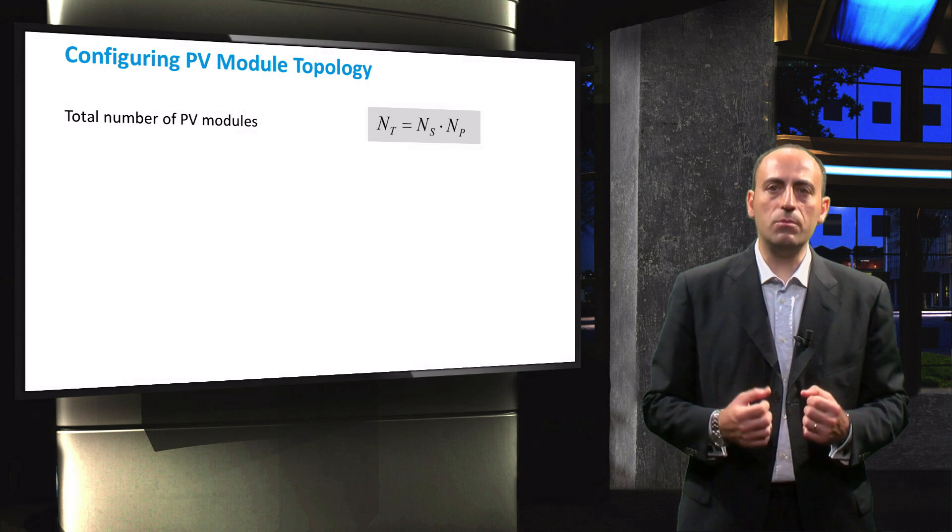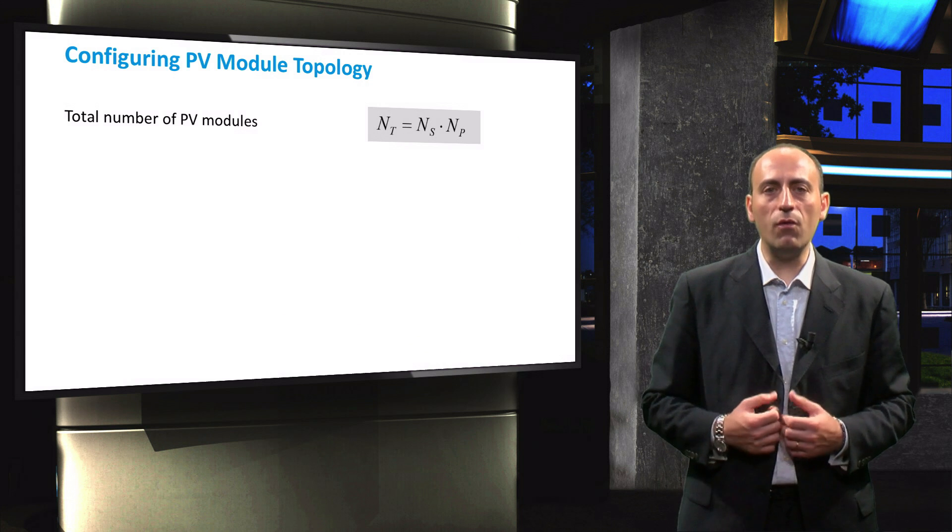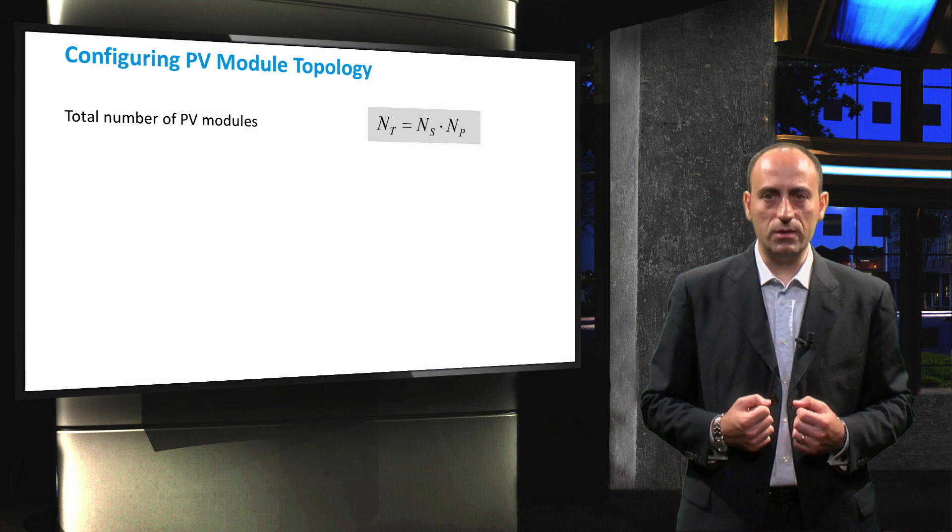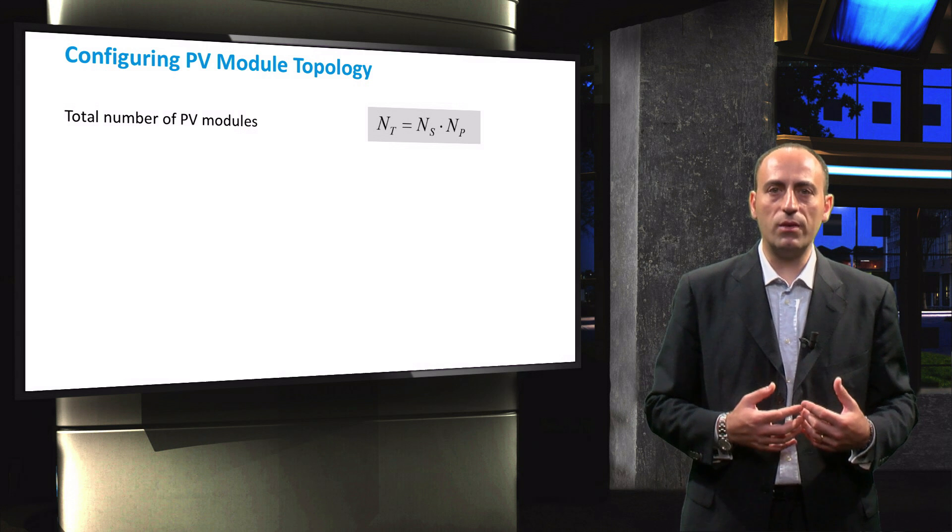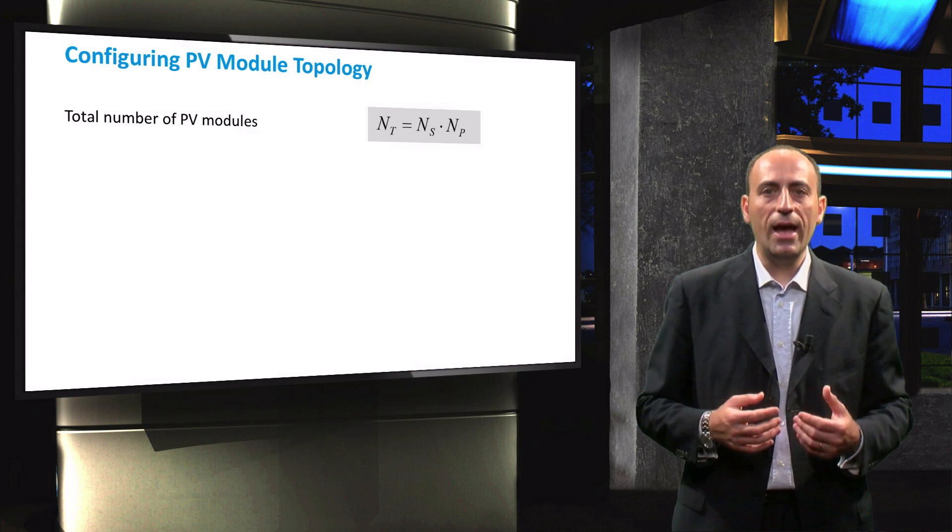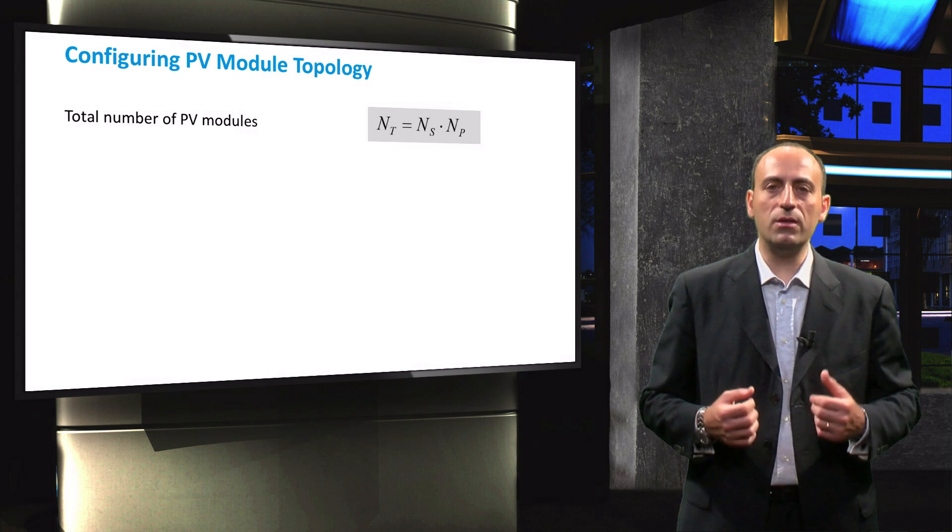With these parameters in mind, we can decide how to configure the modules in the PV system. The total number of modules is equal to the product of the number of series-connected modules in a string and the number of such strings connected in parallel.